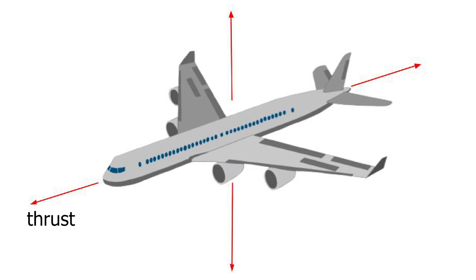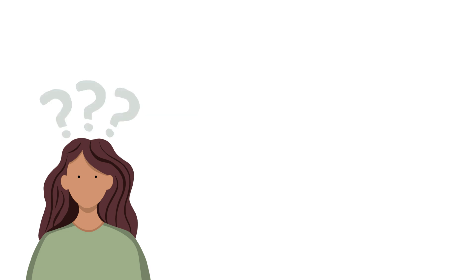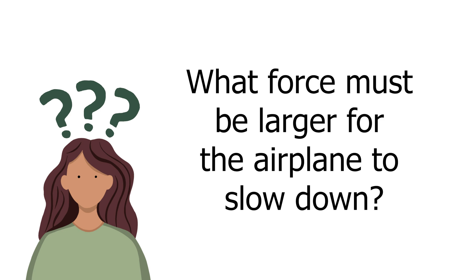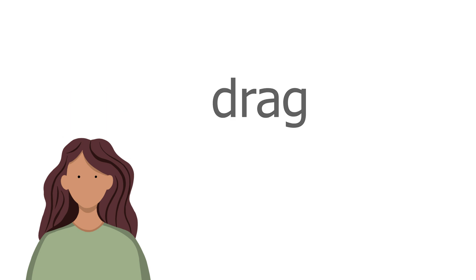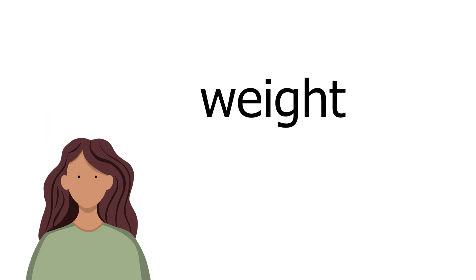Let's do some review. What are the four forces that make it possible for airplanes to fly? The four forces are thrust, lift, drag, and weight. Do you know what force must be larger for the airplane to speed up? If you said thrust, you'd be correct. What about which force must be larger as the plane takes off? The answer is lift. What force must be larger for the airplane to slow down? Drag is the force that slows down the airplane. And lastly, what force must be larger for the airplane to begin descending? If you said weight, you'd be correct.